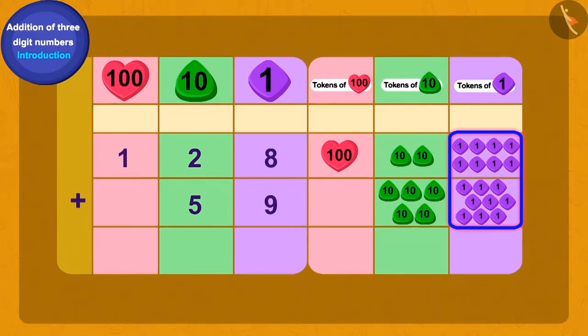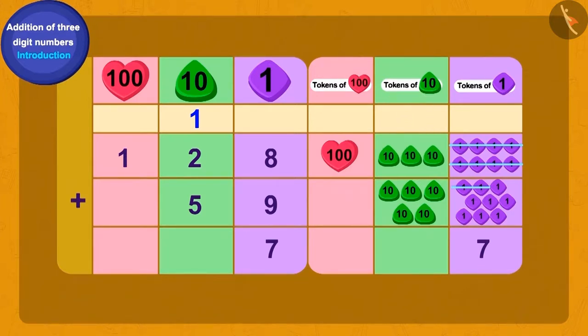Now how do we write this? We can add 10 ones tokens and get one token of tens. How many ones tokens left? We have 7 ones tokens left.